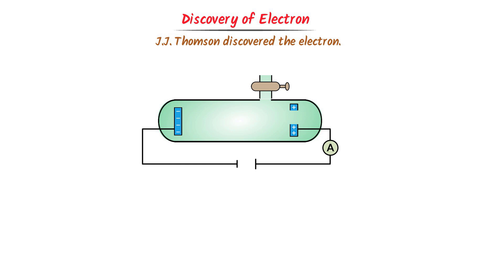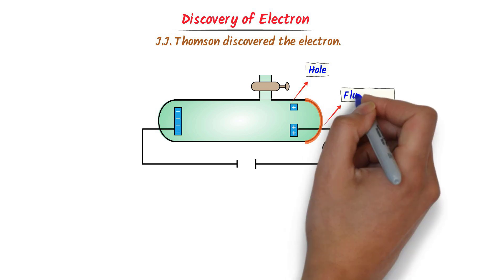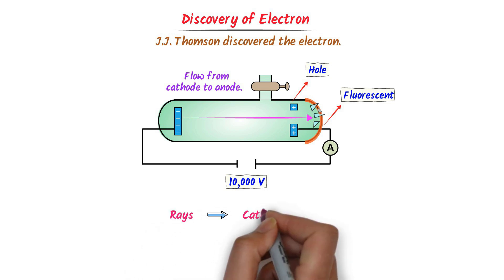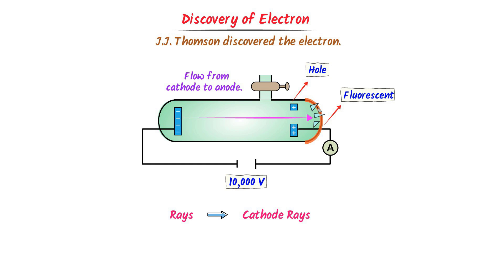Now we will quickly revise the concept of electron discovery, which will help us master the discovery of the proton. We know that J.J. Thomson took a cathode ray tube, made a small hole in the anode, and coated the back side of the anode with zinc sulfide or a fluorescent screen. He then provided 10,000 volts. As a result, the ammeter deflected and cathode rays started flowing from the cathode towards the anode. These cathode rays passed through the anode and hit the fluorescent screen, producing a glow. These rays are called cathode rays because they are generated by the cathode, and later experiments revealed they are negatively charged — what we call electrons.